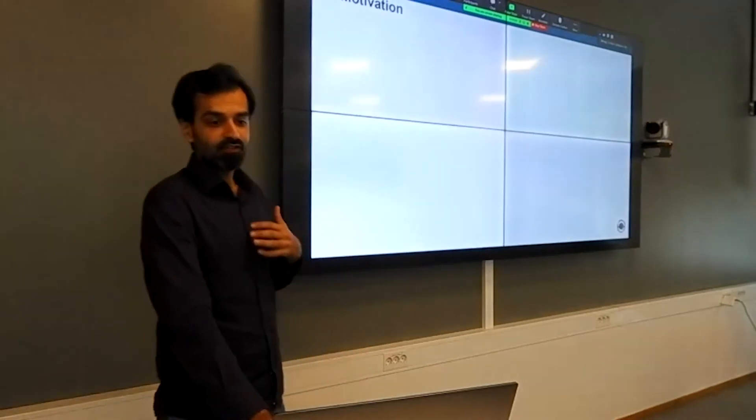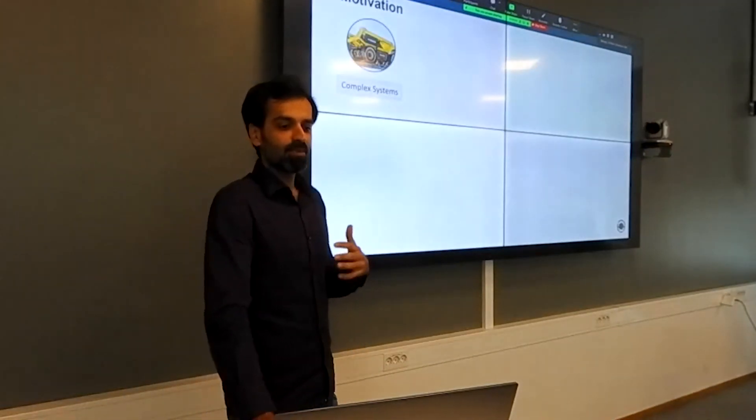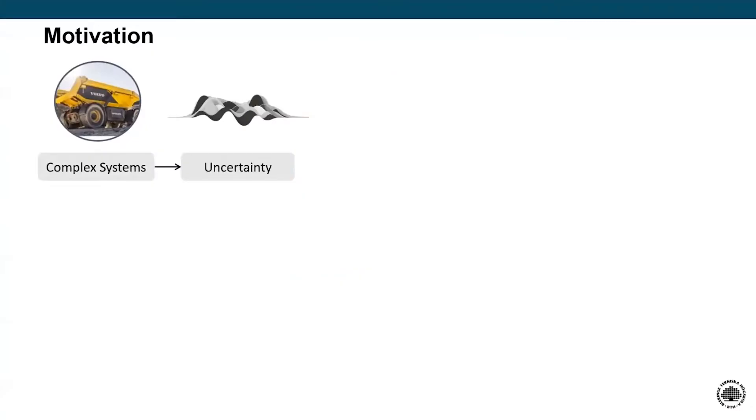So what's the motivation of my research? Complex systems usually go through a lot of uncertainty in their operational phase, and this in turn leads to risks in them not delivering the intended value. If we could develop a system that could be changed so that we can avoid those risks, then we in some sense have a value-robust system.